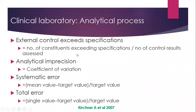Analytical processes KPIs include: external control exceeds specifications — a measure of out-of-control situations; analytical imprecision — a measure of uncertainty expressed in terms of coefficient of variance; systematic error; and total error. This information is taken from a referenced article.